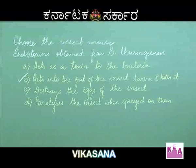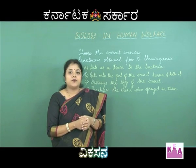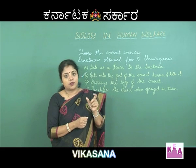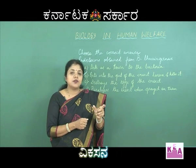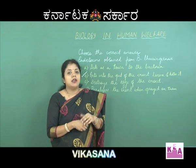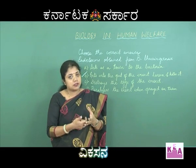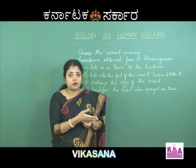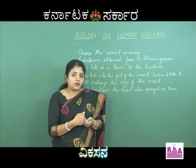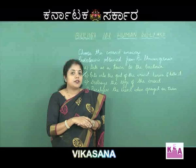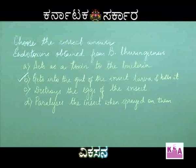Bacillus thuringiensis is also used in modern biotechnology to obtain transgenic plants. The cry gene responsible for synthesis of this endotoxin is isolated and genetically engineered into a plant. This transgenic plant's cells synthesize the endotoxin, and when insects feeding on those plants consume the leaves, the protein gets into the gut of the insect and kills it instantly. Thus Bacillus thuringiensis is a highly valued biocontrol organism.